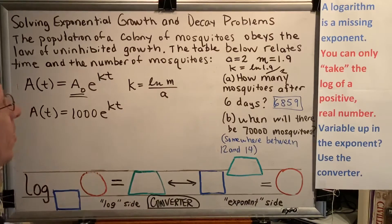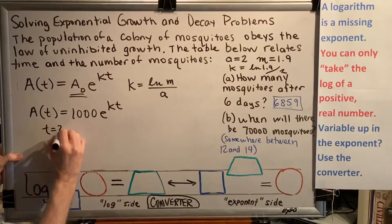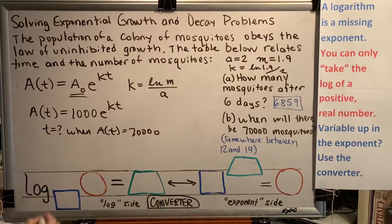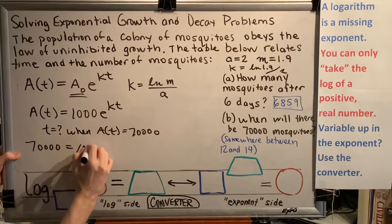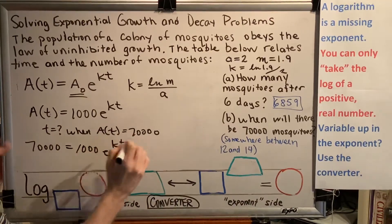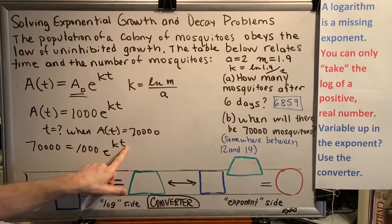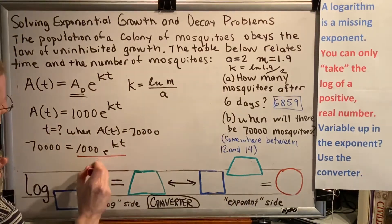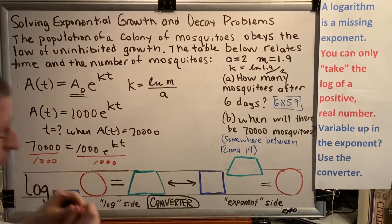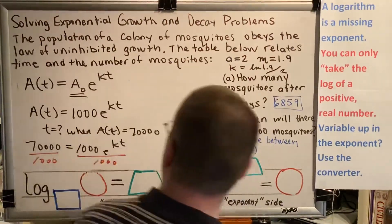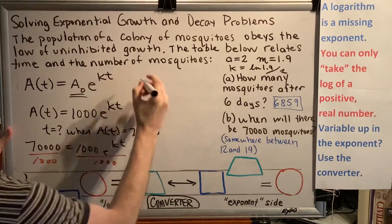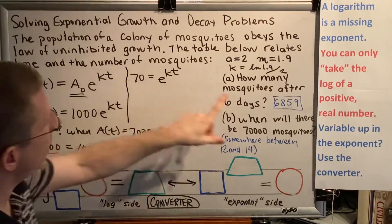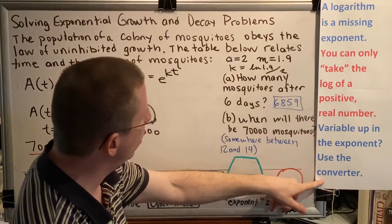Part B says: when will there be 70,000 mosquitoes? So that's really saying t equals question mark when A of t, the amount, is equal to 70,000. So we just have to plug in, giving us 70,000 equals 1,000 e to the kt. We want to solve this for t. The first thing we need to do is get rid of this 1,000, so divide by 1,000 on both sides. Our equation becomes 70 equals e to the kt power. We're trying to solve for t, and t is up in the exponent. When what you are looking to solve for is up in the exponent, use your converter.